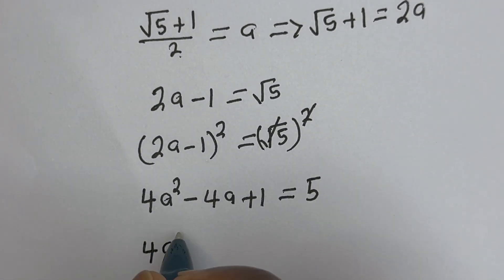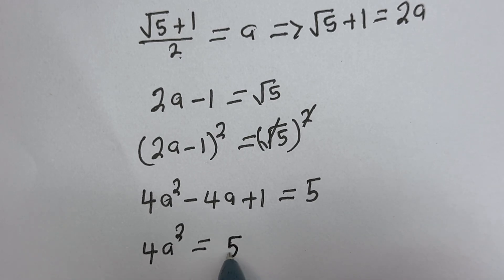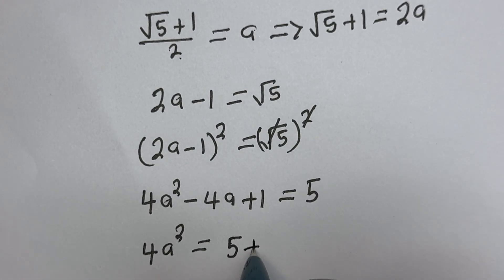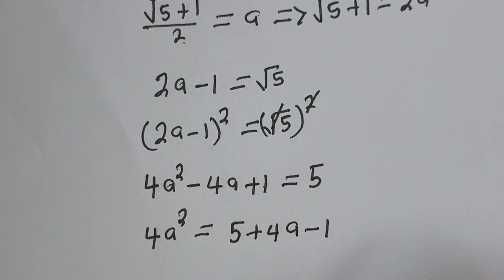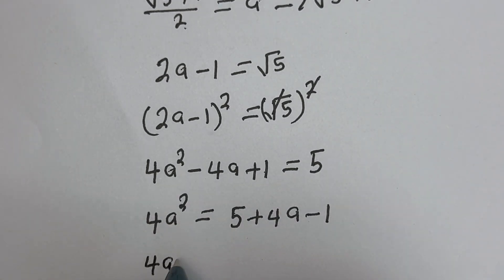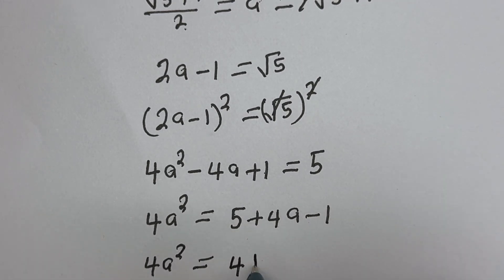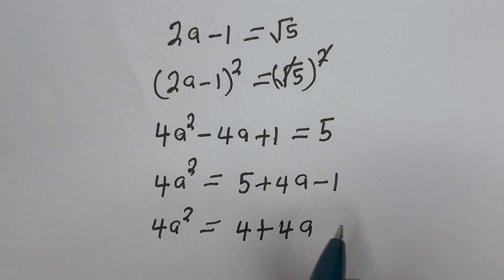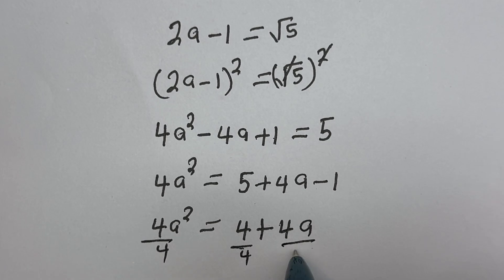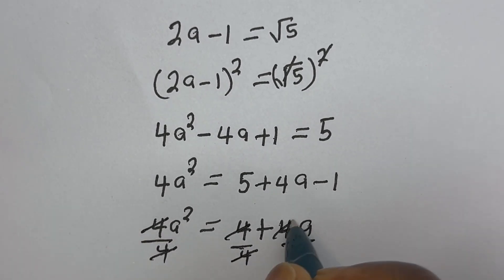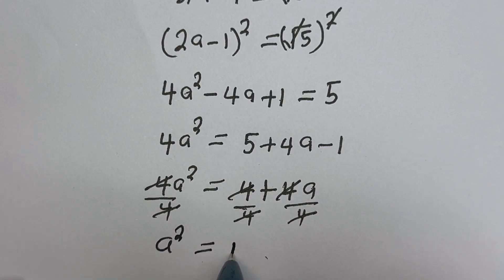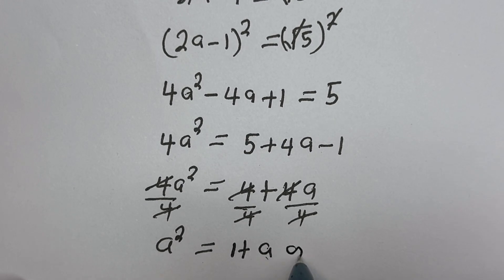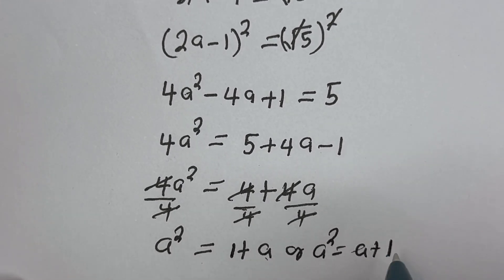Then 4a² equals 5 minus 1 plus 4a, that is 4 plus 4a. Dividing all through by 4, we get a² equals 1 plus a, or a² equals a plus 1. Let's call this equation star.